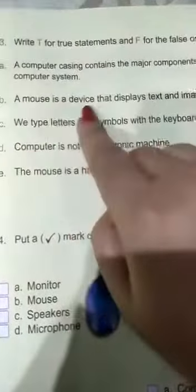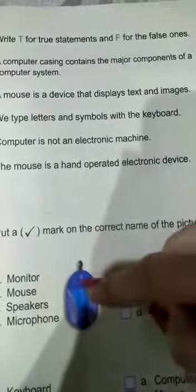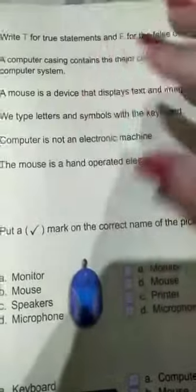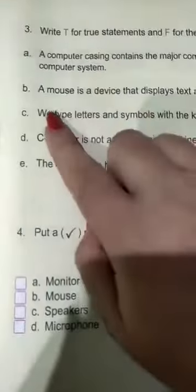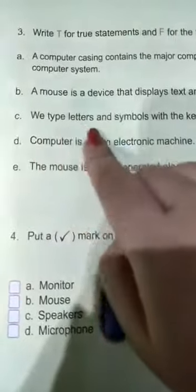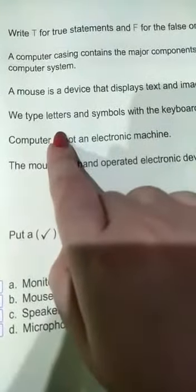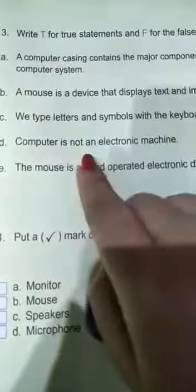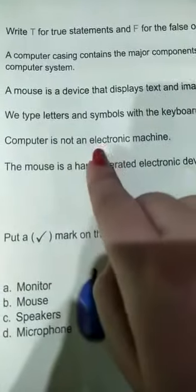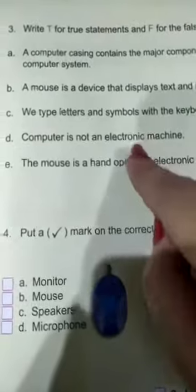A mouse is a device that displays text and images — this is false. Next: we type letters and symbols with the keyboard — yes, this is true. The computer is not an electronic machine — false, the computer is an electronic machine.